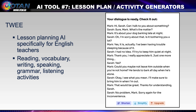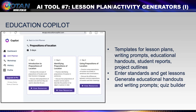That is just one tiny piece of this AI tool. Education Copilot has AI-generated templates for lesson plans, writing prompts, educational handouts, student reports, project outlines, and a lot more. All you need to do is enter standards, and you get lessons. You can generate handouts and writing prompts, and there is a quiz builder. With a sign-up, you get a 30-day free trial, and to continue using it after the trial, the plan costs $9 a month. I tried it, and the tool created for me three days of lesson plans and handouts for teaching prepositions of location.